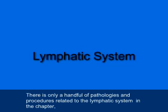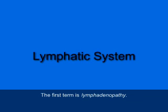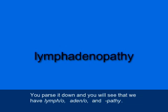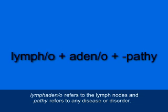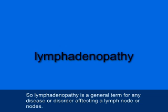There's only a handful of pathologies and procedures related to the lymphatic system in the chapter, but they do tend to be terms that are confused, so I'm going to go over them with you. The first term is lymphadenopathy (L-Y-M-P-H-A-D-E-N-O-P-A-T-H-Y). If you parse it down, you'll see lympho, adeno, and pathy. Lymphadeno refers to the lymph nodes, and pathy refers to any disease or disorder. So lymphadenopathy is a general term for any disease or disorder affecting a lymph node or nodes.